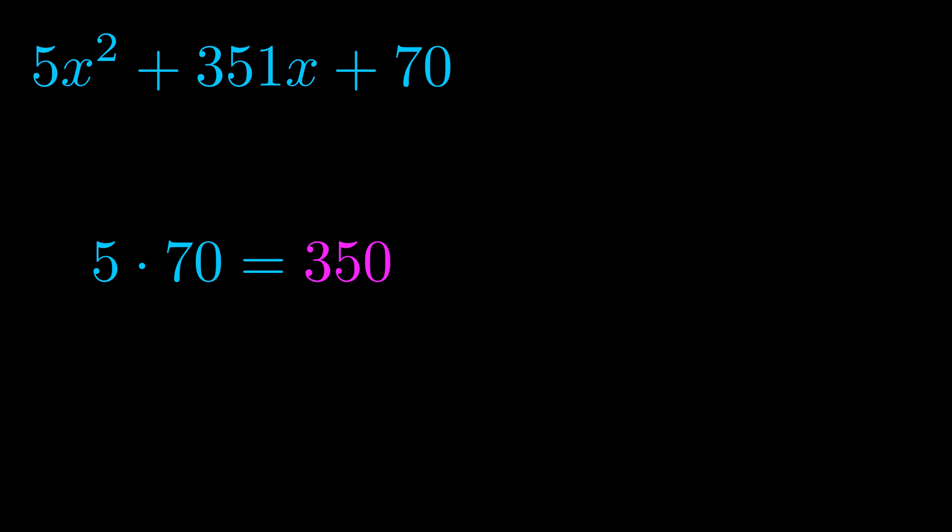Step two is to try to find all of the pairs which multiply to this number. Now it turns out you don't really need to find all of them, but go ahead and write down as many numbers as you can that multiply to the magenta value for now. Pause the video and resume when you're ready to continue.